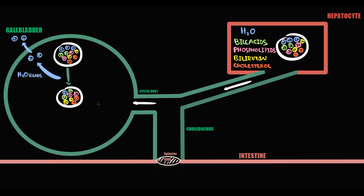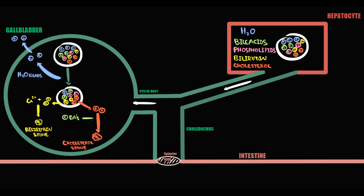Bile contains cholesterol, and cholesterol molecules are very sticky — they are extremely prone to aggregation with each other, which can potentially cause formation of cholesterol gallstones. The same story applies to bilirubin, which can bind calcium and precipitate with formation of calcium bilirubinate gallstones. The substances that inhibit aggregation of cholesterol molecules are bile acids and phospholipids. They solubilize cholesterol and by this prevent aggregation, thereby inhibiting the formation of cholesterol gallstones in the gallbladder.